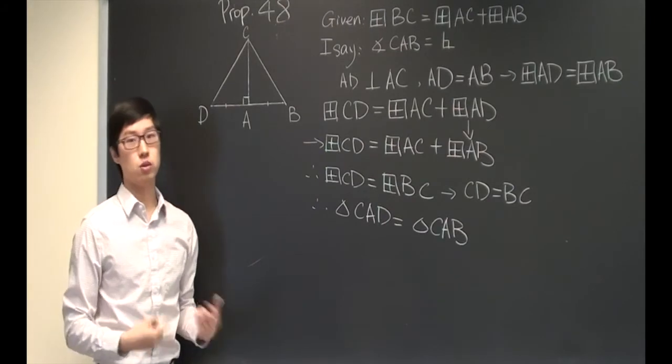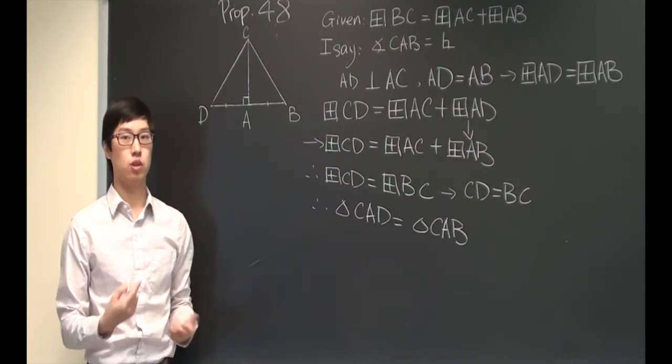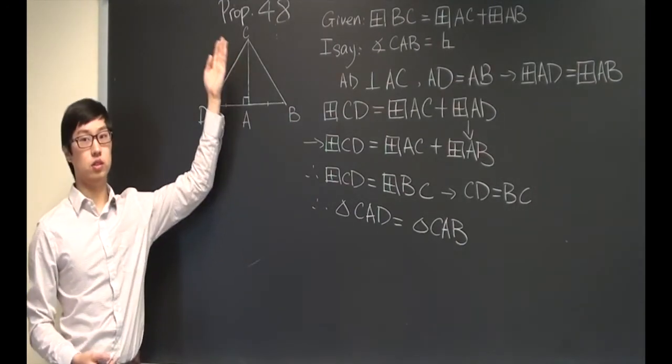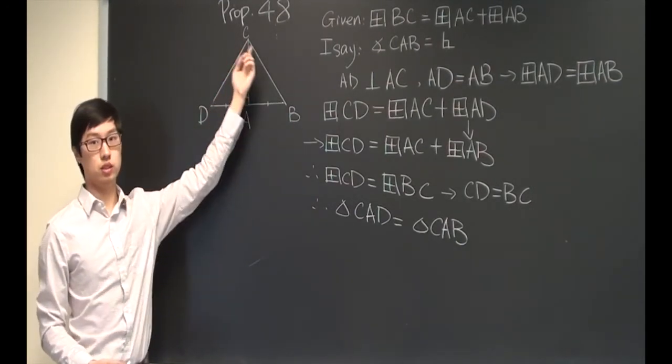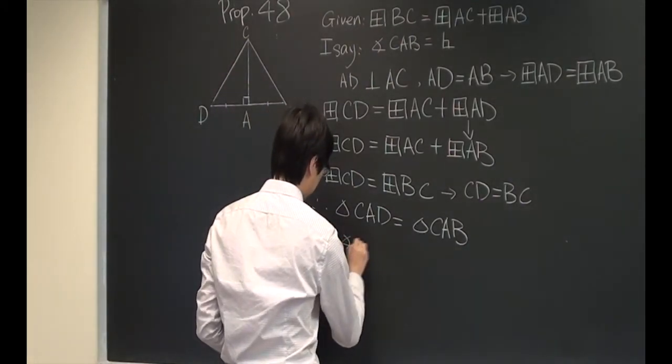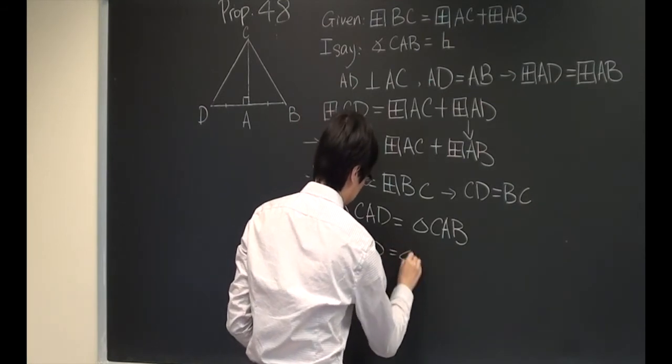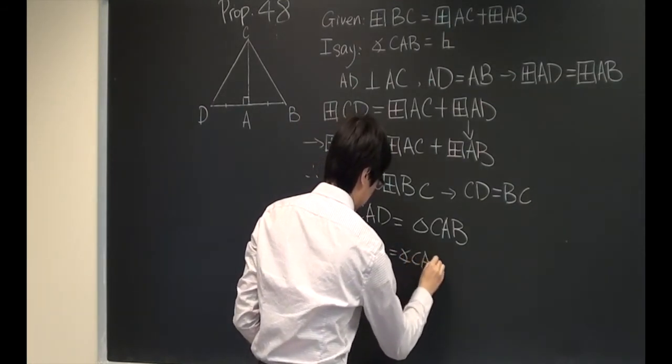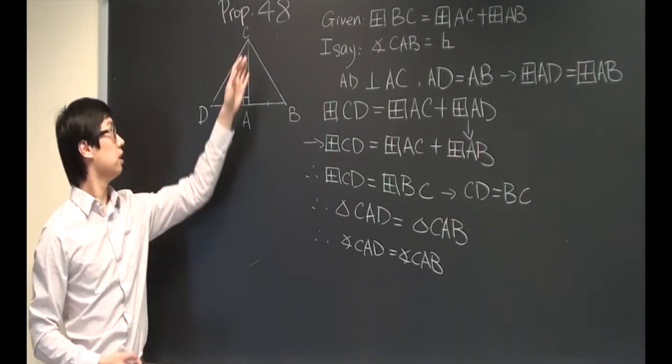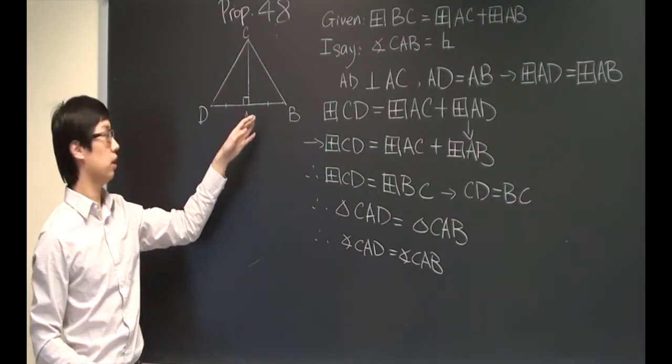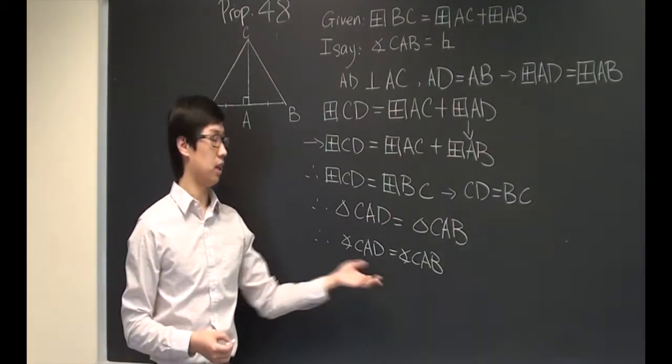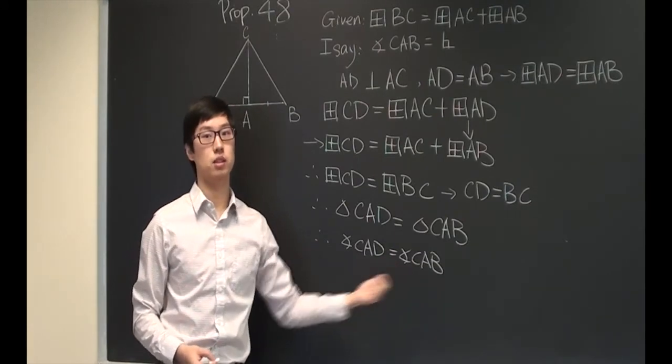Therefore, equal triangles share all equal angles. Therefore, angle CAD is equal to angle CAB. And I've constructed that CA is perpendicular to AD. Therefore, CAD is a right angle. Then angle CAB is also right.